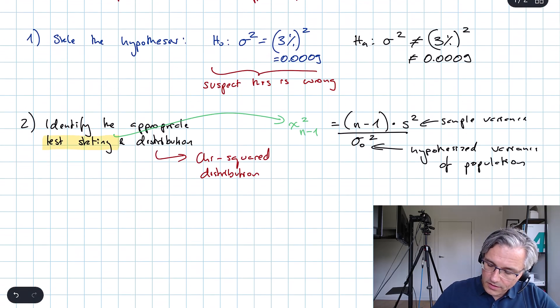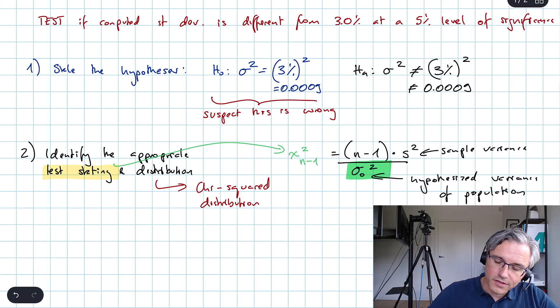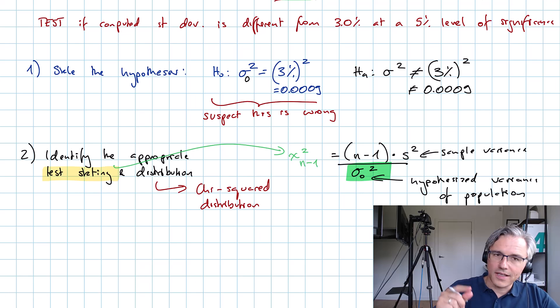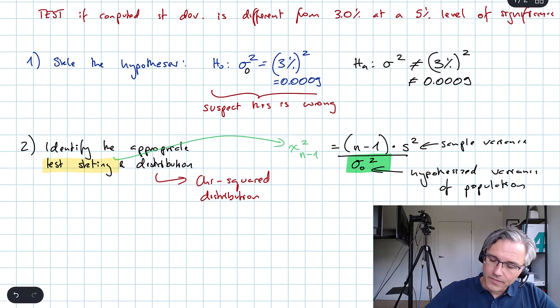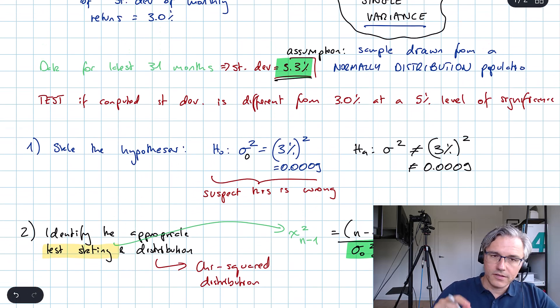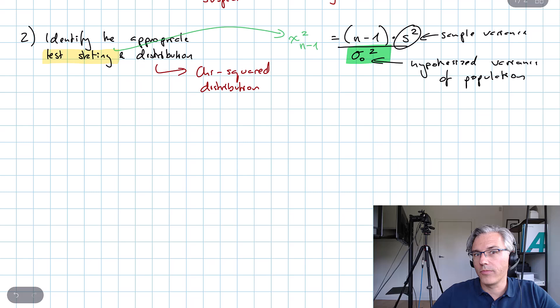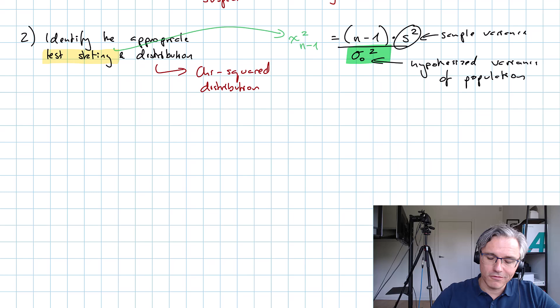In our case, what's in the denominator, this σ² squared, the variance of the population is basically going to be 3-percent-squared, that 0.0009. s² is going to be this result, the standard deviation coming from the sample squared, so 3.3-percent-squared. This is going to be relatively easy to compute, so you may get asked to do this in the exam.